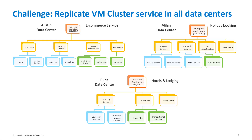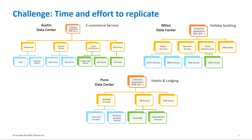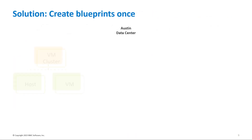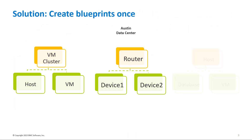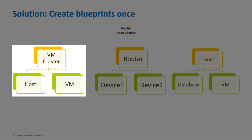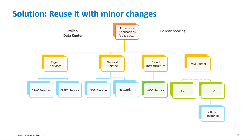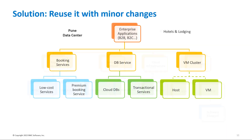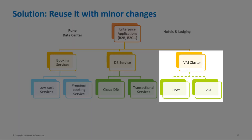Presently, Susan needs to create service models across all data centers. The entire process requires a lot of time and effort. If she uses the service blueprints capability, she can create a single blueprint for one data center and use it across all data centers, by simply changing a few parameters that are specific to each data center and location.